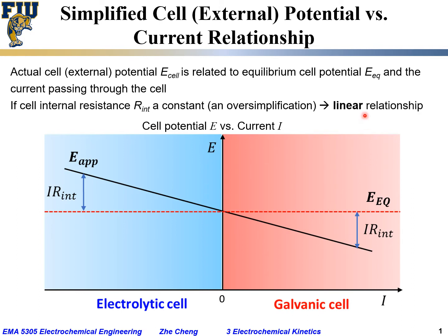We would have a linear relationship between the cell voltage and the current. Specifically, when the current is positive, we say it's a galvanic cell, and in this case the cell potential would be the equilibrium potential minus a value represented by current times cell internal resistance R_int.